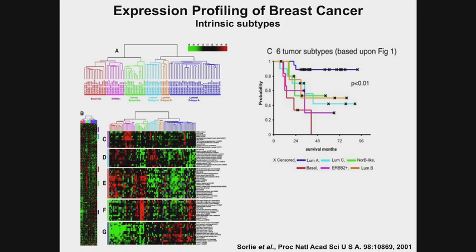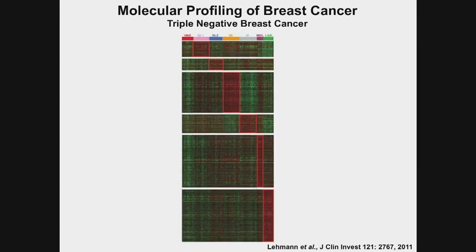What do they mean by luminal and basal? The luminal designation means the gene expression of these tumors looks like the cells lining the lumen of the breast duct. The basal cells are those lining the outside of the duct, and those tumors have a gene expression profile similar to basal cells. To be careful, it doesn't mean these tumors arose from luminal or basal cells — it means they look like them. The question of where these cancer cells come from is still open. But at the end of the day, luminal tumors look like lumen-lining cells and basal tumors look like the basal area of the breast.